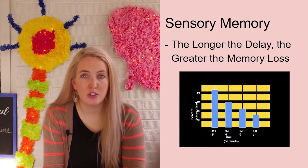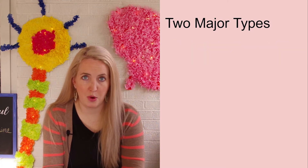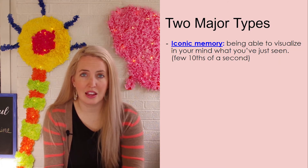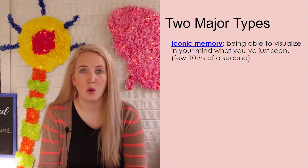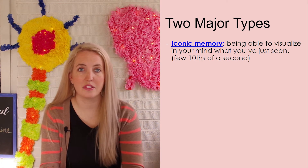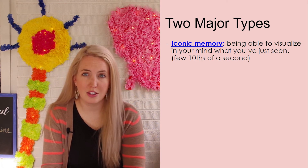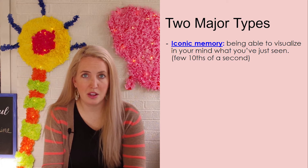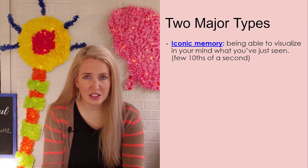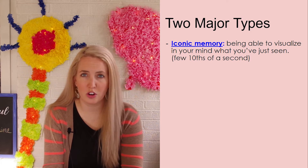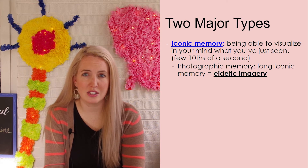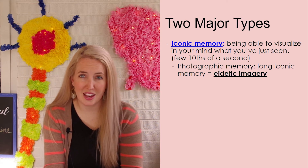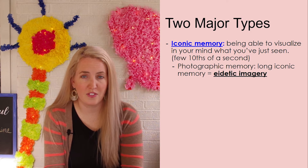Within sensory memory, we have two different types of memory: iconic memory and echoic memory. Iconic memory — you can think of it like icons. If you were to click on an icon on a desktop computer, it is an image. Sensory memory's iconic memory refers to the images that we see. These images that we're exposed to all over the world we are able to see for just a few tenths of a second, and if we don't pay attention to them, they fade from our memory very quickly.